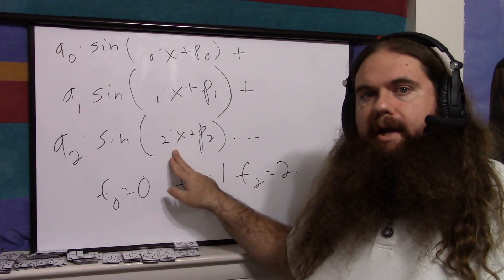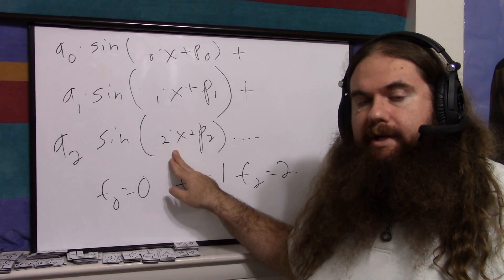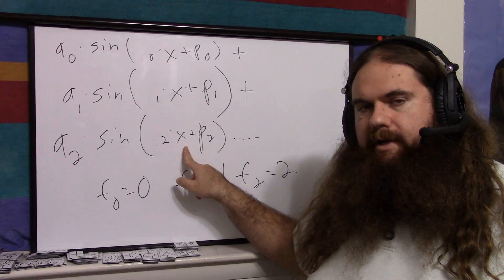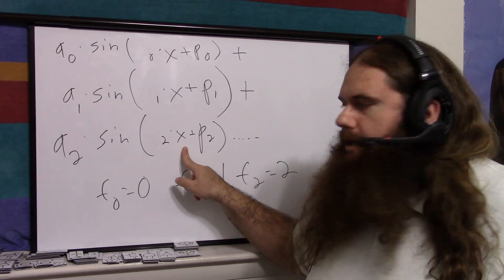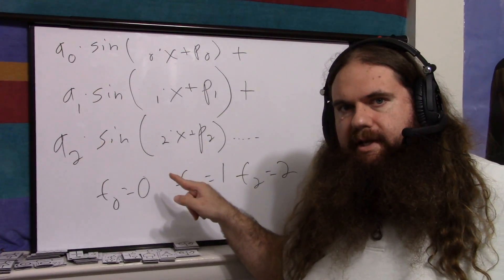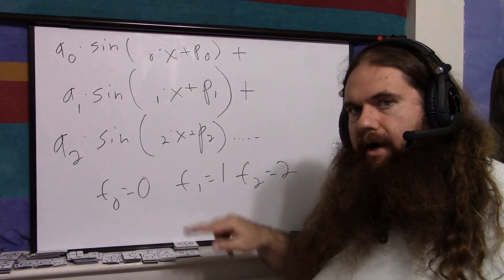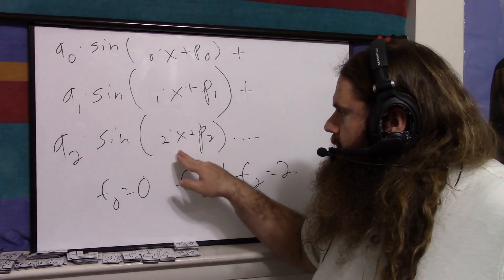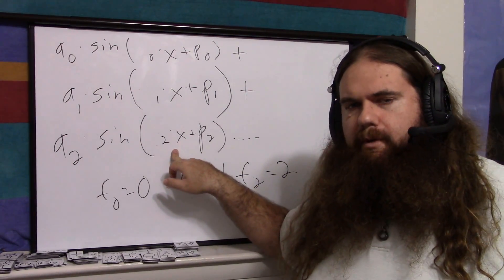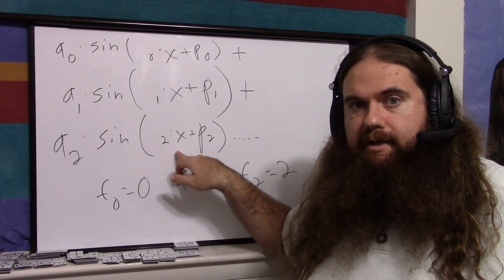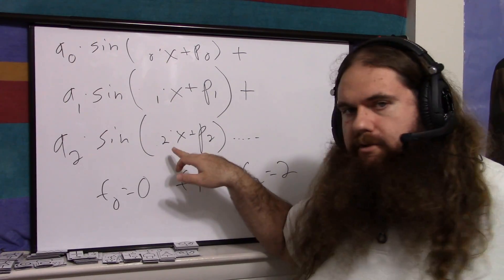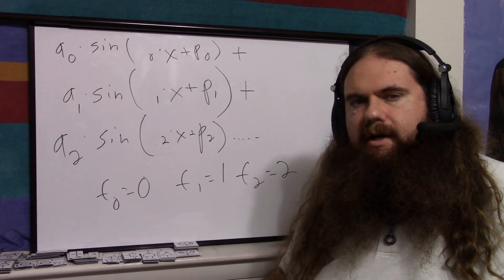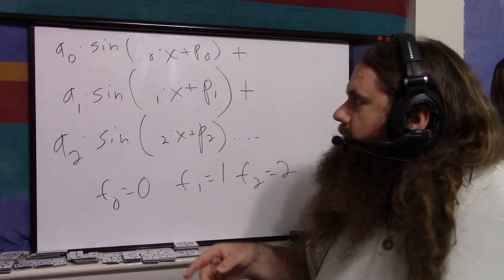If you're multiplying 2 by x, you're getting there twice as fast. Every time your x is π, it's actually taking the sine of 2π. So if you were dividing x by 2, then you would have to get to 4π of x before it was actually 2π. So multiplying the x in a sine is the frequency.